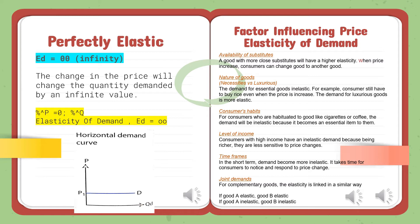Consumer habit is another factor. For consumers who are habituated to a good, like cigarettes or coffee, the demand will be inelastic because it becomes an essential item to them. As a result, smokers will continue to smoke no matter how expensive cigarettes become.